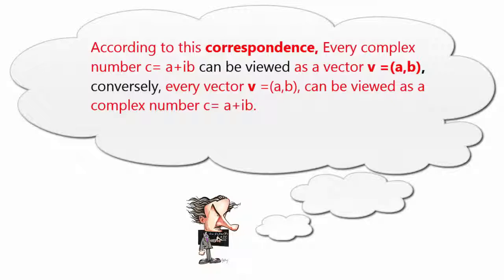Conversely, every vector V equals (A, B) can be viewed as a complex number C equals A plus iB.